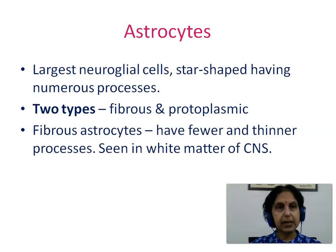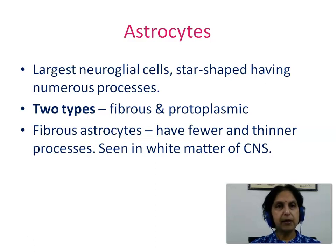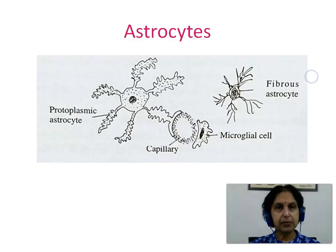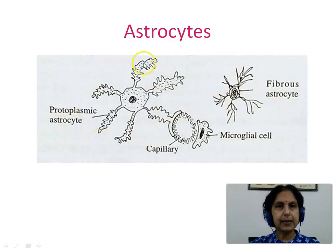Astrocytes are the largest neuroglial cells — star-shaped with numerous processes. They are further classified into two types: fibrous and protoplasmic. Fibrous astrocytes have fewer and thinner processes and are seen in the white matter of the CNS, while protoplasmic astrocytes have numerous short thick branching cytoplasmic processes and are seen in the gray matter. This picture shows us both types of astrocytes.